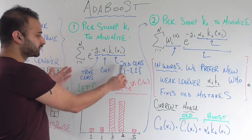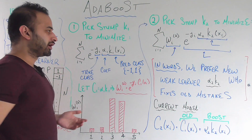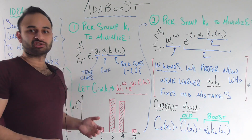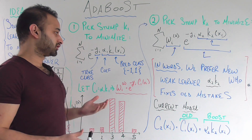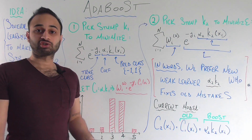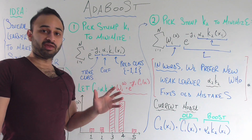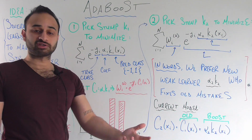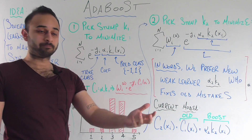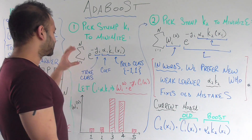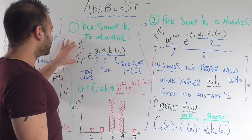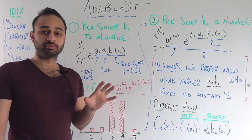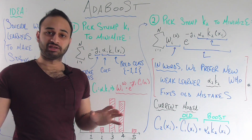We're going to be using the following loss function for the first iteration of our AdaBoost. Now I know that just looking at this equation, it doesn't really enlighten you — it is difficult to see what anything means. So I've labeled everything and let's talk through the story of this formula.